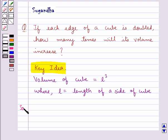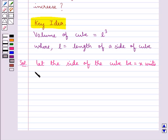Now let's see the solution. First, let's assume the side of the cube is equal to x units. Then the volume of the cube would be equal to x³ using the formula.